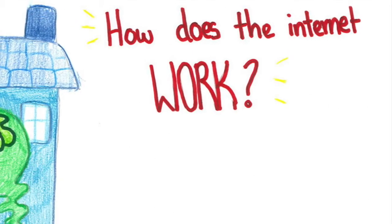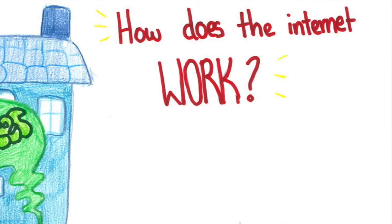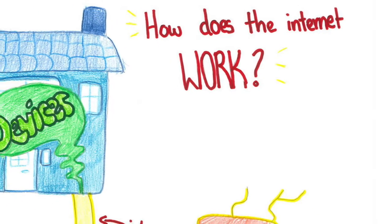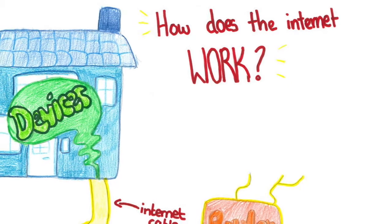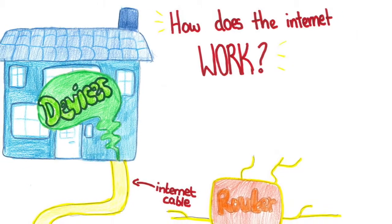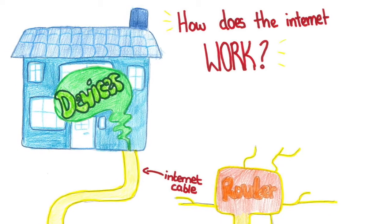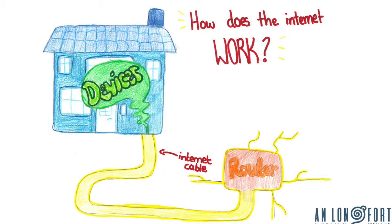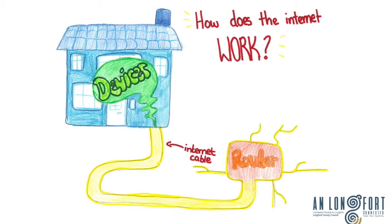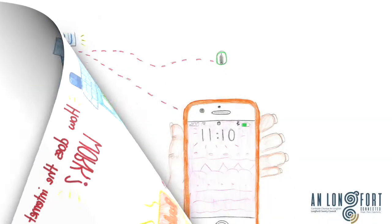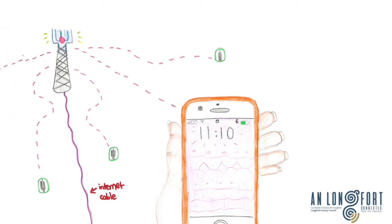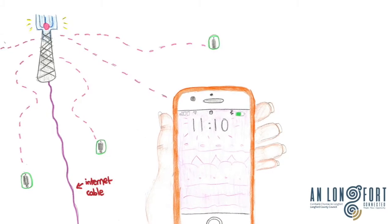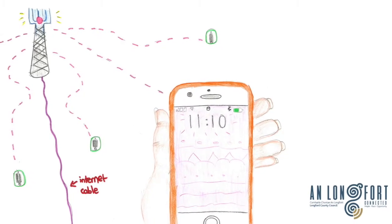But how does the internet work? At home, you may have many devices connected to the internet without wires. The internet cable is connected to a router to allow internet access to these devices. The internet cable then connects back to the nearest cabinet exchange. You can also connect to the internet on your mobile — signals are sent to and from your mobile through a mobile phone mast, which is connected to an internet cable.